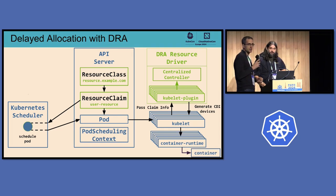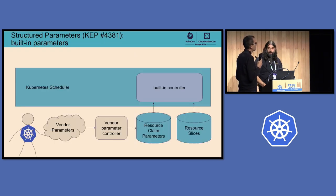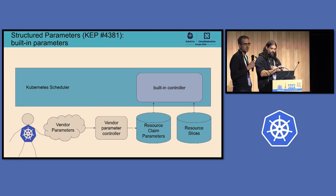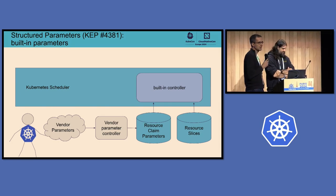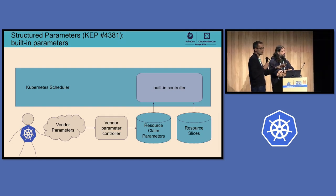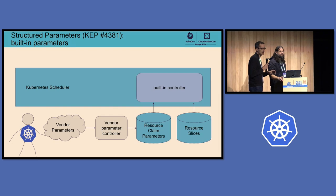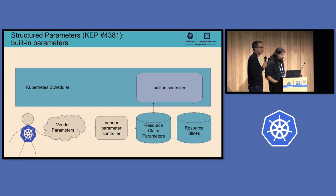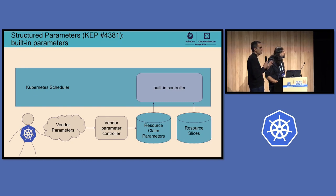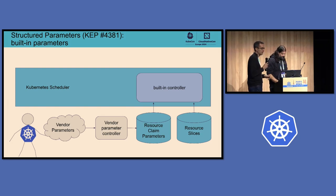We are now reconsidering this whole approach because the ideas about supporting cluster autoscaling with it just didn't work well. It would have centered around rebuilding autoscaler binaries with custom vendor logic compiled in, or having a gRPC mechanism between the autoscaler and DRA drivers, since the pod scheduling context object lives in the cluster and the autoscaler can't use it as a communication mechanism like the scheduler can. The new approach is now called structured parameters — currently a separate KEP, but it may become the main dynamic resource allocation proposal.